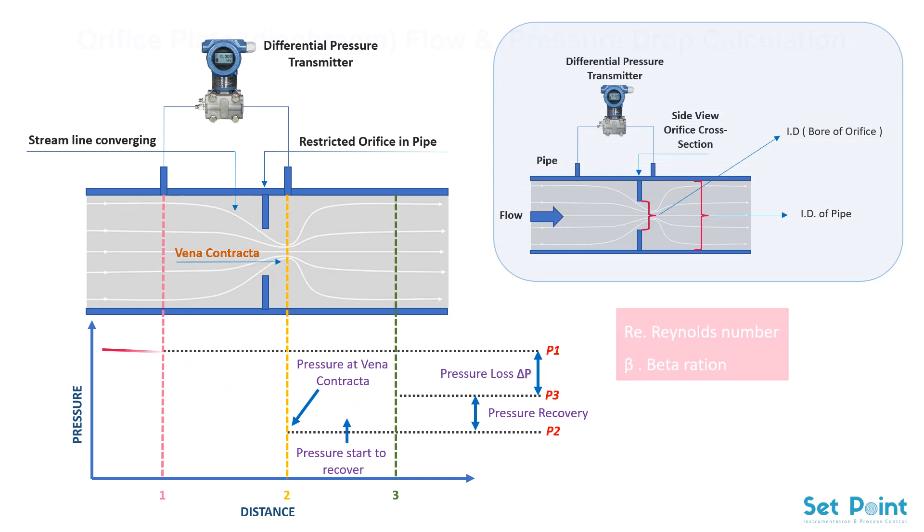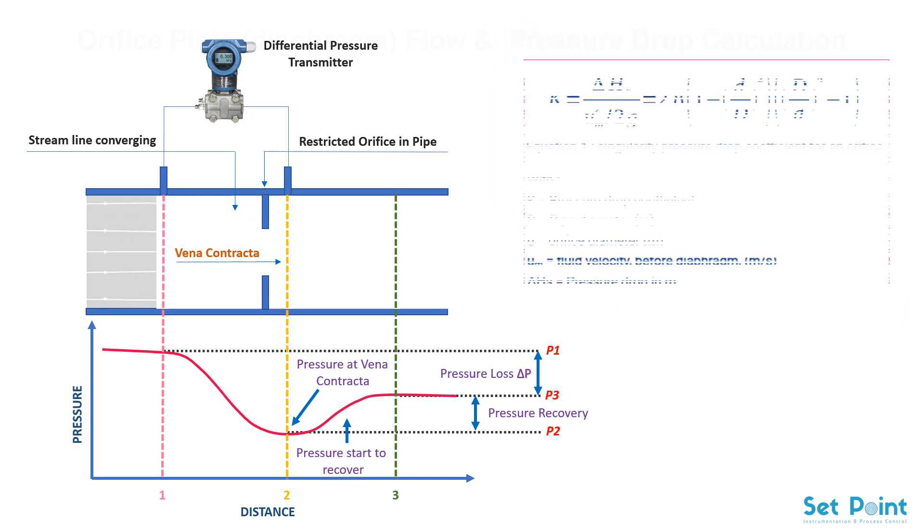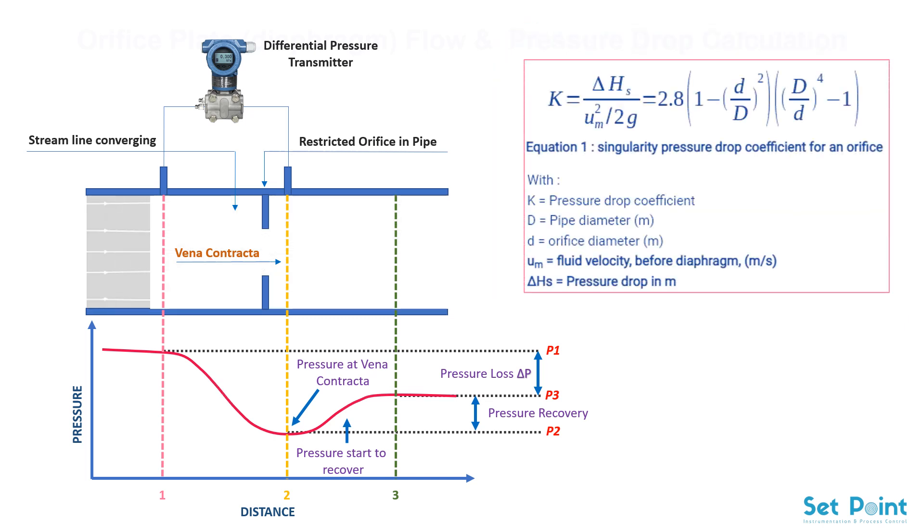Pressure drop across orifice is mainly affected by Reynolds number and beta ratio. The following correlation is given by Gibson, it is reproduced in many books. It relates the flow through the orifice and the pressure drop.